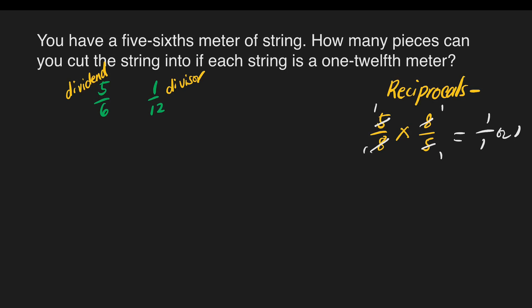First step: we will write 5/6 divided by 1/12. Then we need to change the divisor to its reciprocal. What is the reciprocal of 1/12? What do we multiply to 1/12 to get a product of 1? So we'll multiply it to 12/1.